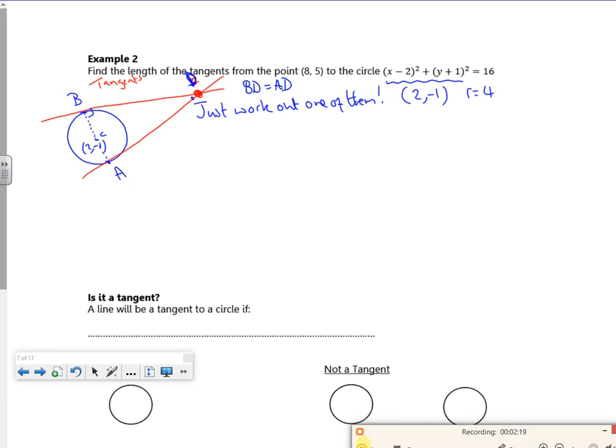Right. So what do I know? If I look at B to D to C, I've got B to D, which is unknown. I've got a right angle triangle.